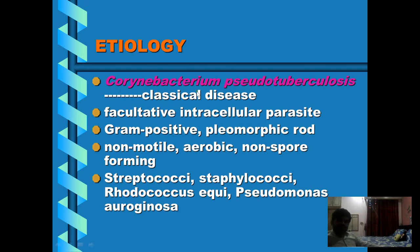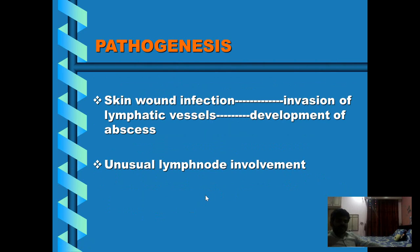In addition to Corynebacterium pseudotuberculosis, Streptococci, Staphylococcal species, Rhodococcus equi — which is a cause of pneumonia in foals — and Pseudomonas aeruginosa have also been isolated from cases of ulcerative lymphangitis in equines and in cattle. When we talk about pathogenesis: